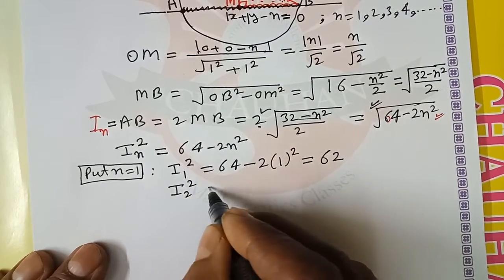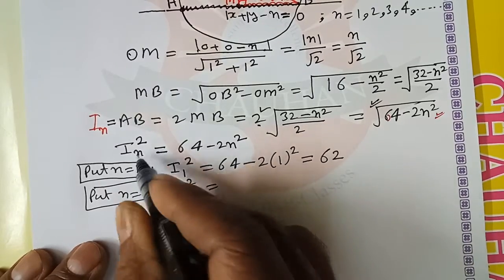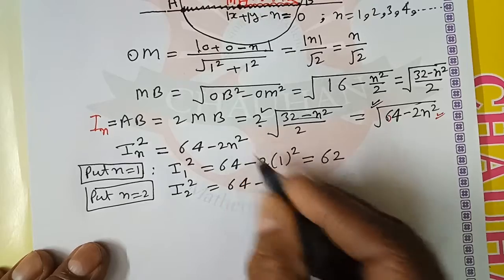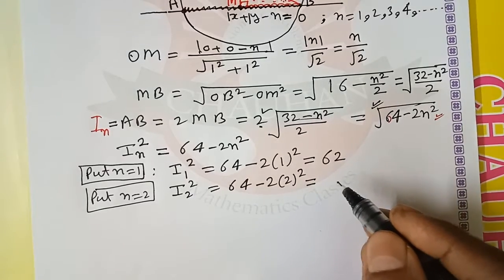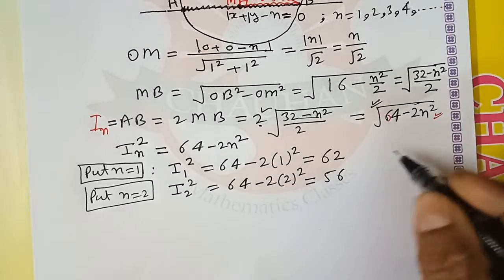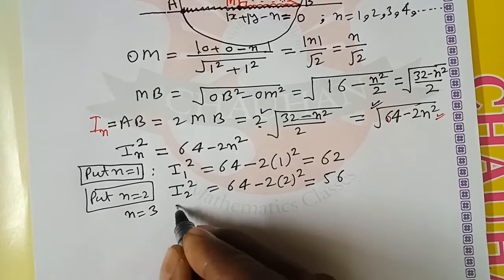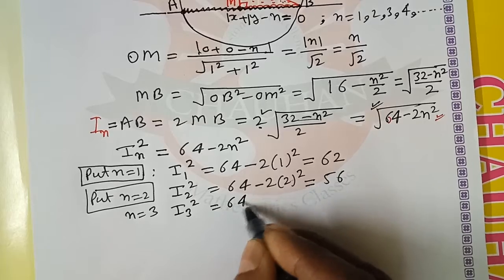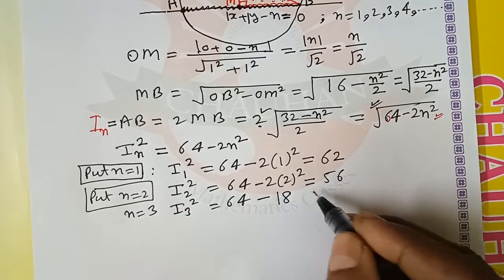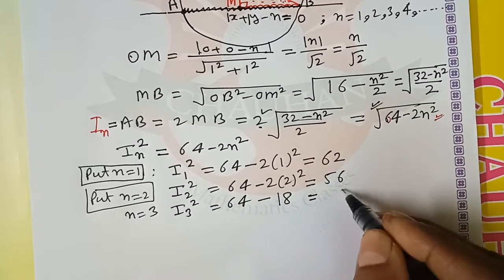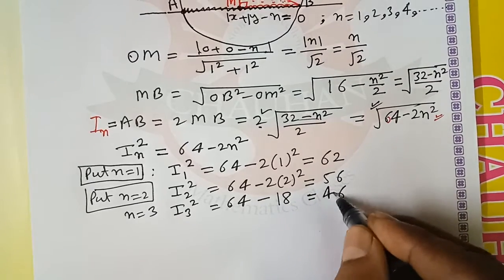Similarly, i₂ squared with n equal to 2: 64 minus 2 into 2 squared equals 56. For n equal to 3, i₃ squared equals 64 minus 2 into 3 squared. 9 times 2 is 18, so 64 minus 18 equals 46.